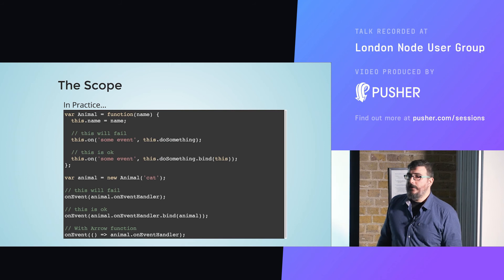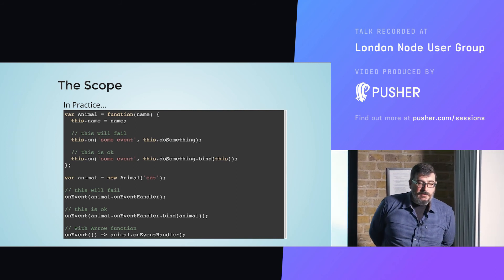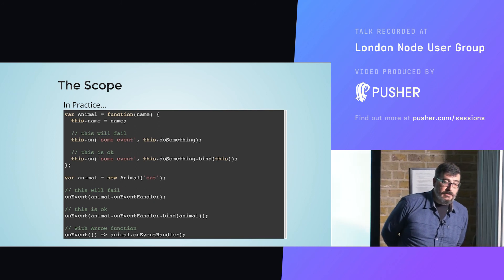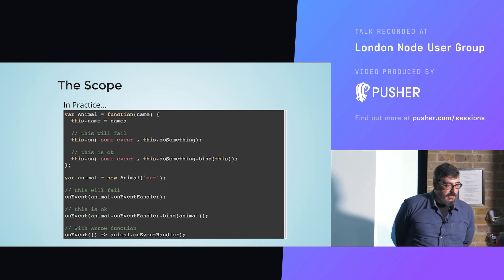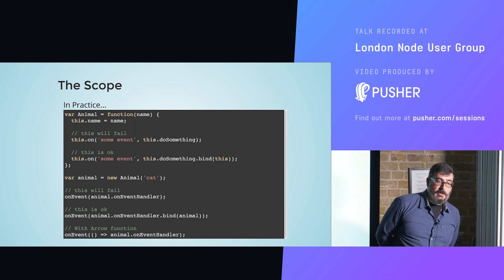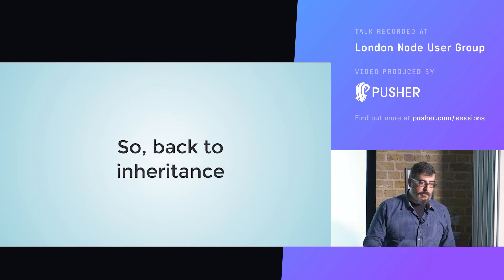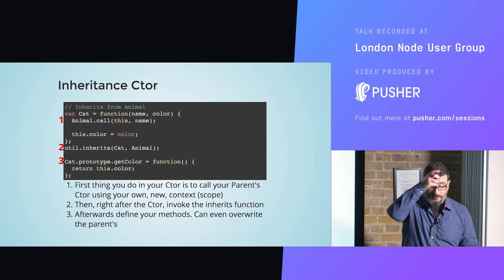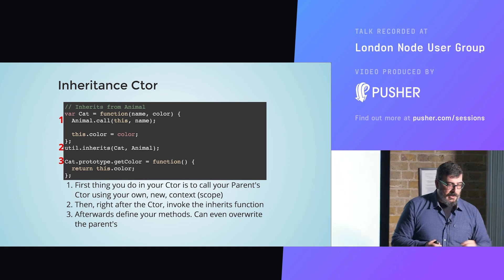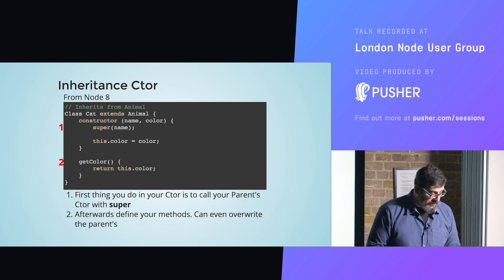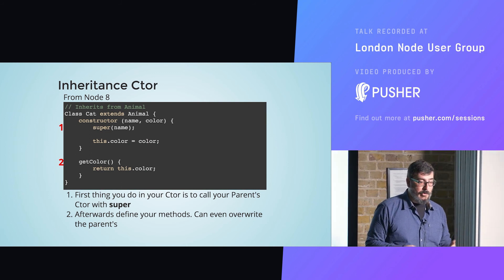A very classical example that everybody learns the hard way is that you can't define a method without binding it to the scope, otherwise it loses its scope — it's the same effect as assigning the variable back. One way to skip that effect with modern JavaScript is to use the arrow function notation. You can scroll through the presentation afterwards — it's already uploaded on SpeakerDeck.